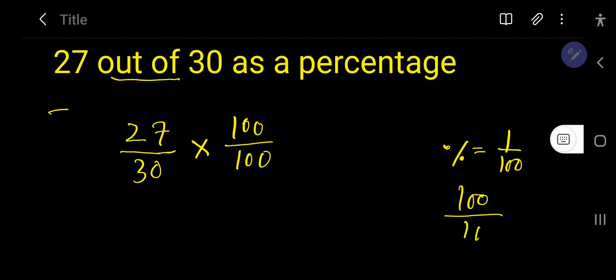100 over 100 means 1. That is, you can look at 27 over 30 times 1. Instead of 1, you can write 100 over 100.